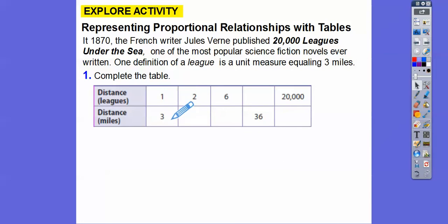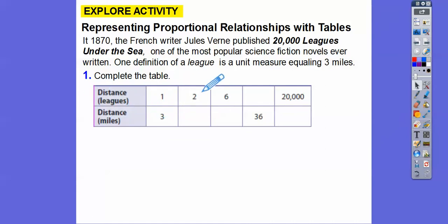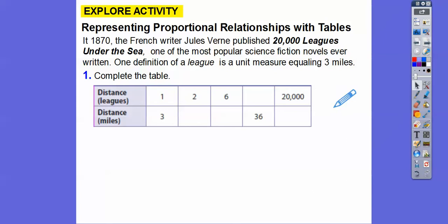Each league represents three miles, so one league is three miles. Two leagues would represent two times three. Six leagues would represent six times three, and so on. Always remember: the top row of a table is our x-axis numbers, and the bottom row is our y-axis numbers. Think alphabetical order — x comes before y, so the top row is x and the bottom row is y.